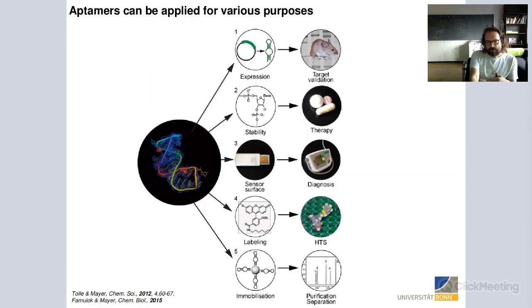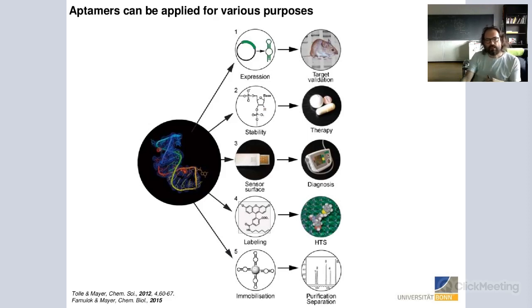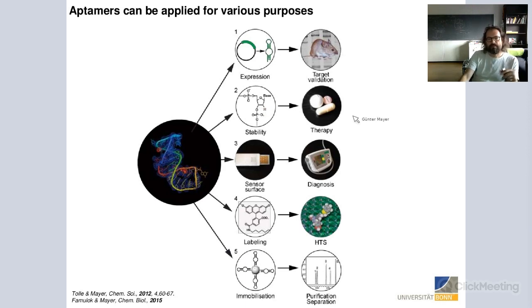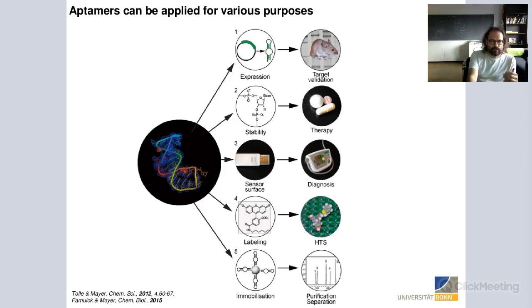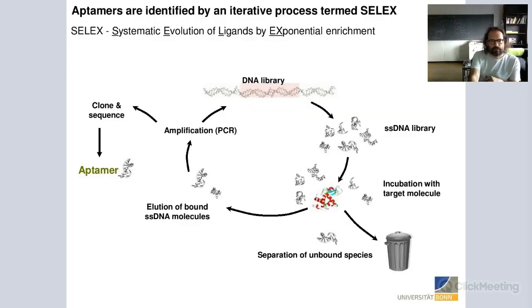Based on this binding activity, aptamers can be applied to various applications. These include: target validation in cells and animal models, therapy approaches — exemplified by Macugen — diagnostics (one of the most prominent applications), high-throughput screening, and purification of a target from complex mixtures to allow separation for downstream analysis. In most of these examples, aptamers have been shown to be quite useful.